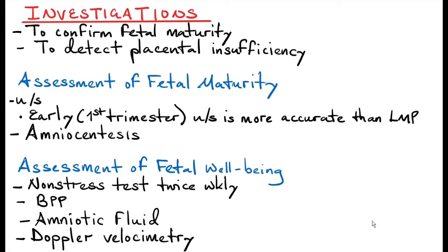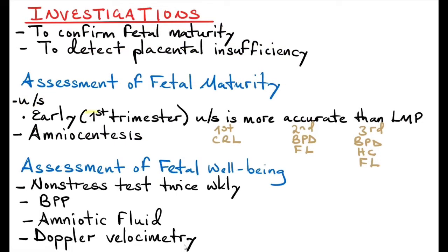The aim of investigations in a post-term pregnancy is to confirm fetal maturity and to detect placental insufficiency. Assessment of fetal maturity includes doing an ultrasound scan and amniocentesis. The first trimester ultrasound scan is more accurate than the last menstrual period because some patients don't remember their LMP, and the LMP alone is not a good predictor of ovulation. In the first trimester, we use the crown-rump length, which is more accurate than using the last menstrual period.